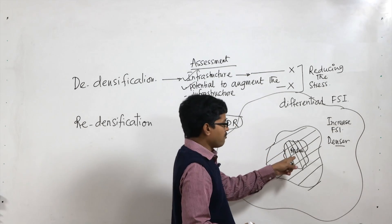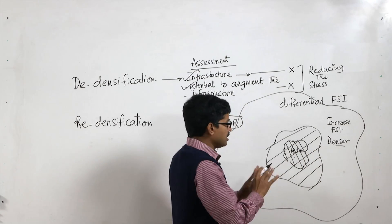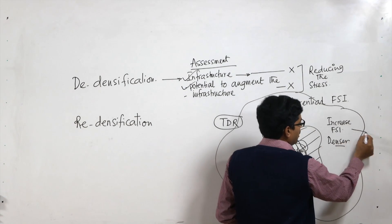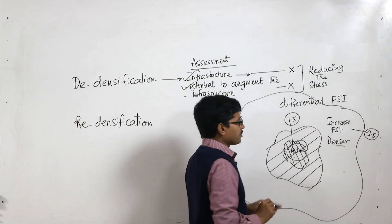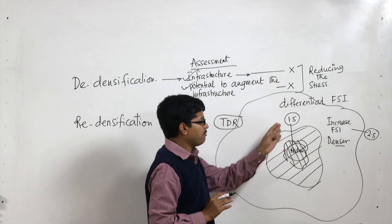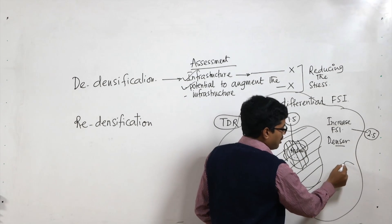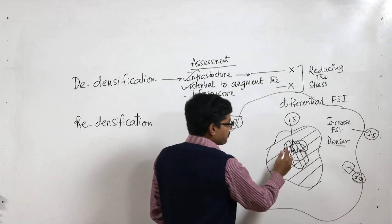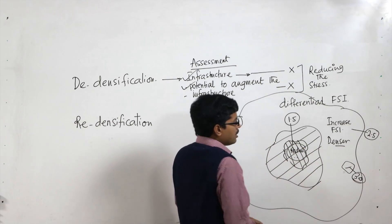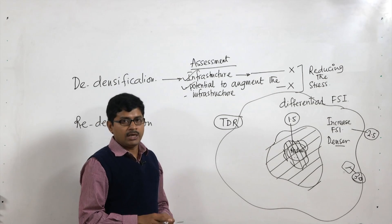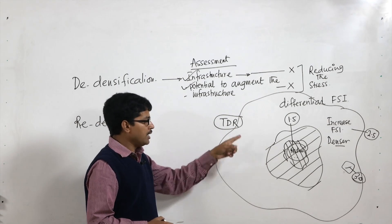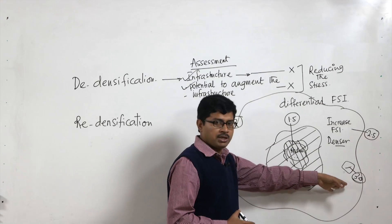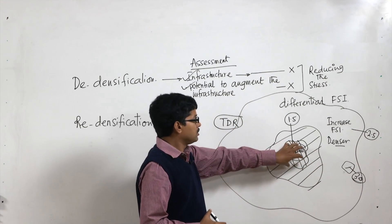For example, if the average FSI prescribed for the city is 2, and here in the core you are prescribing 1.5 and in the outskirts 2.5, since the average FSI is 2, the remaining 0.5 FSI can be transferred to another plot in the outskirts and you can go for 3.0 or 3.5 FAR on that plot. Transfer of FAR from one part to another by using the right to develop land with equity — that is transfer of development right. Those kinds of mechanisms and tools can be used by the city authority to incentivize development in outskirts areas and disincentivize development in the core city area.